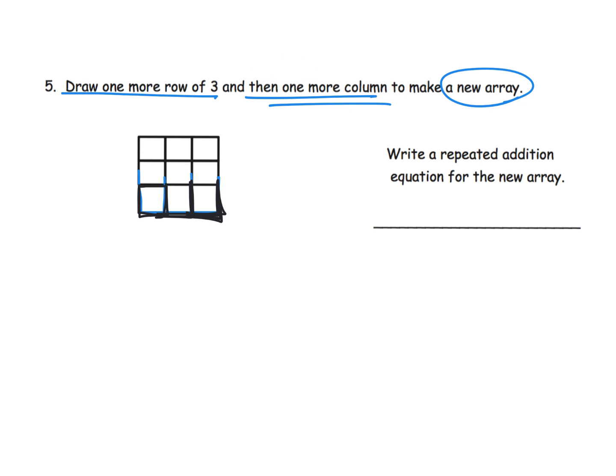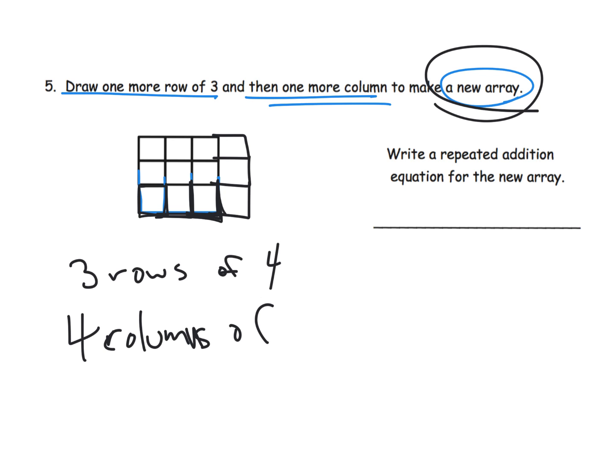Then it says add one more column. One more column, one, two, three. So what is our new array? Our new array is three rows of four, or we could say four columns of three. We have two ways that our students could think of this. Likely Eureka Math is going to think of three rows of four as four plus four plus four, although your students could say this is actually four columns of three, in which case they would write three plus three plus three plus three. Either of those are correct.